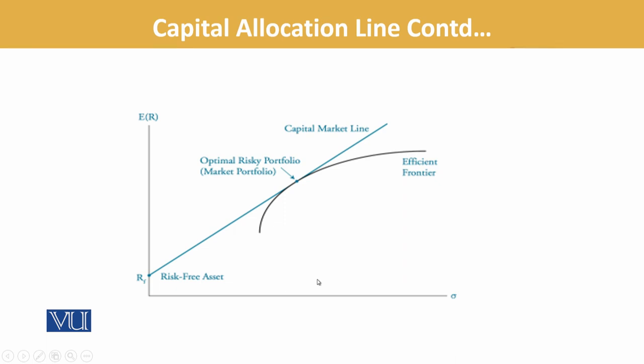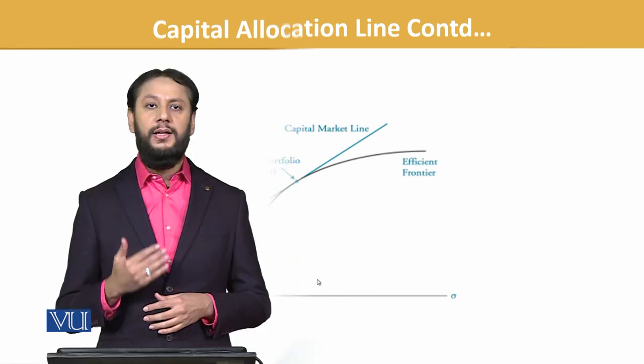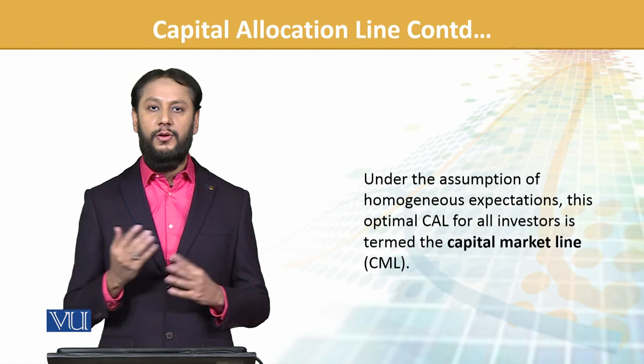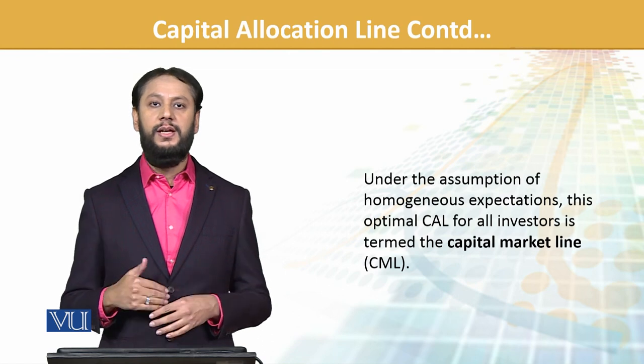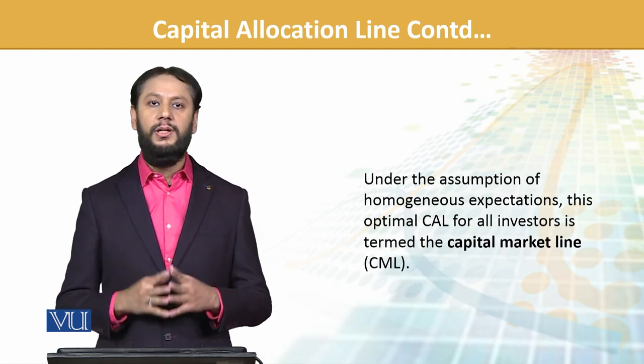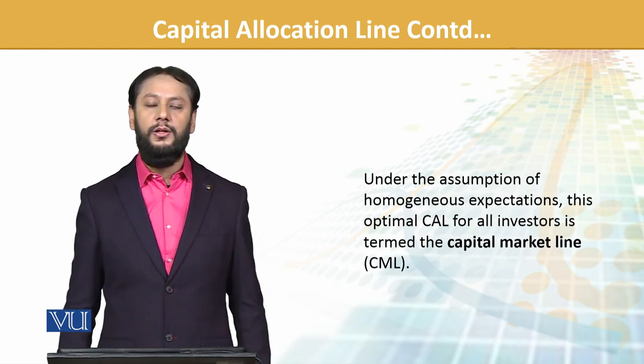Under the assumption of homogenous expectation, one single CAL is formed. Now this CAL is called the CML — Capital Market Line. When it is one CAL and homogenous, then it is the CML. We will discuss this further.